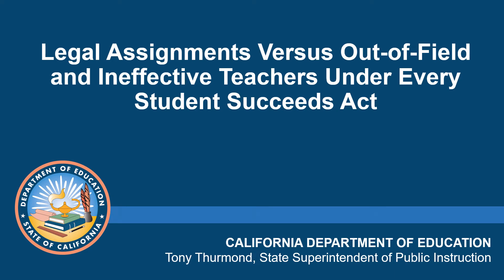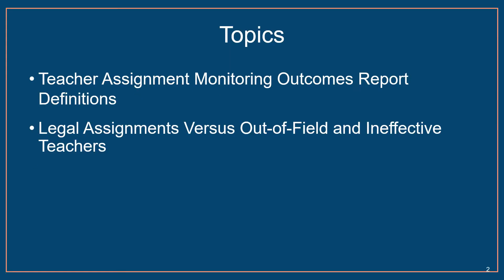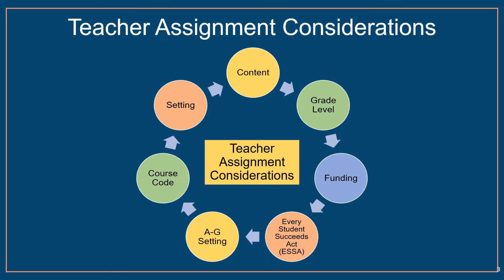This is part of a series of training videos that pertain to the Teacher Assignment Monitoring Outcome Reports. This video will discuss the difference between what the Commission on Teacher Credentialing would define as a legal assignment, but that may be reported as out of field or ineffective in the new Teacher Assignment Monitoring Outcome Reports. In this video, we will discuss the Teacher Assignment Monitoring Outcome Report definitions, and explore the difference between legal assignments under the Commission on Teacher Credentialing and the California Every Student Succeeds Act.